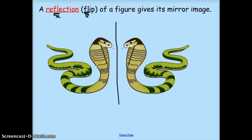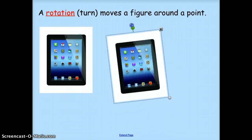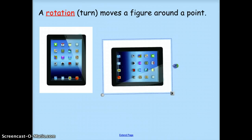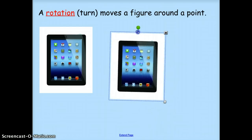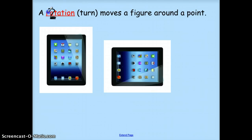Our third transformation — first we had translation, then we had reflection, and now our final one is rotation. Rotation is when you turn or move a figure around a point. You can see that this object was upright and I just turned it, I rotated it. Think about the earth — the earth rotates, that means it spins around. This object just turned on a fixed point. And there is a little clue in rotate: I look at the O going around and around — rotation means turning around.